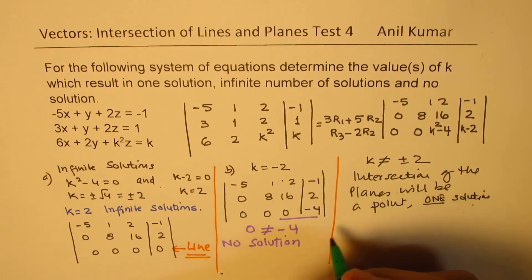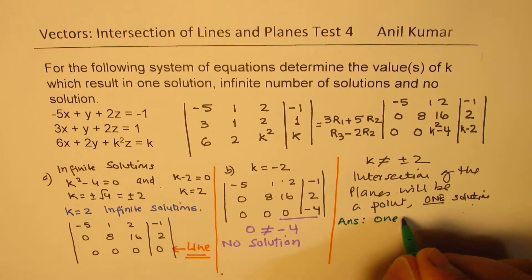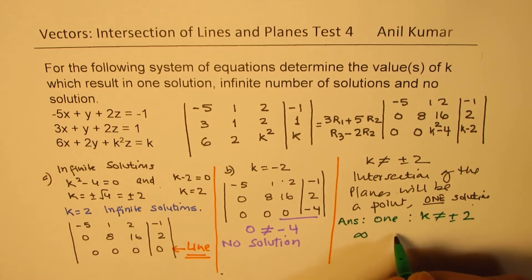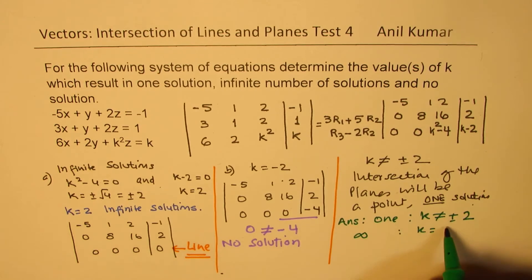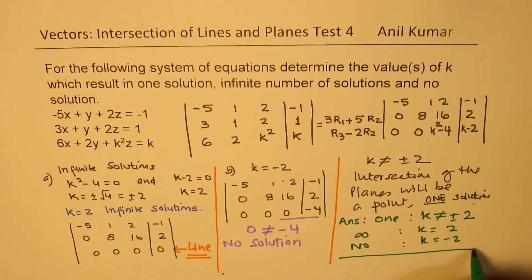What we get here as our answer is that for one solution, k is not equal to plus minus 2. For infinite solutions, k is equal to 2. And for no solution, you can write k equals to minus 2. So that is how we are going to solve this particular question.